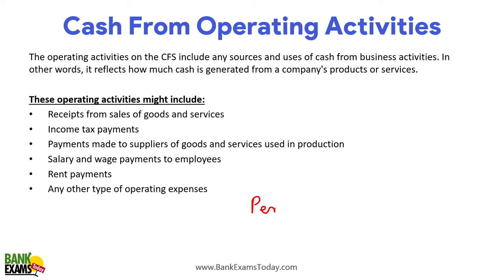For example, you have a pencil manufacturing factory. So to set up a pencil factory, first of all you need to set up a proper factory. You need to purchase machinery. To purchase machinery, you need to fund it — you need to take a loan and put your own money. All these cash activities are recorded in the cash flow statement.